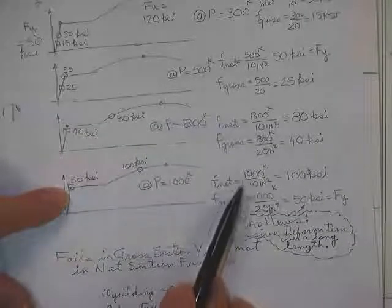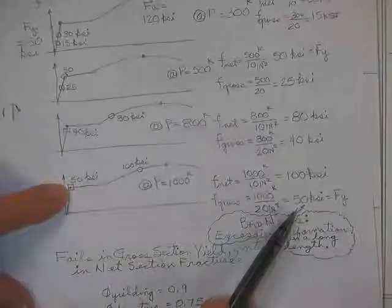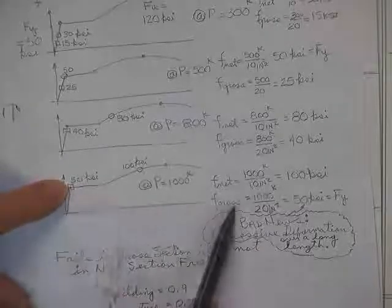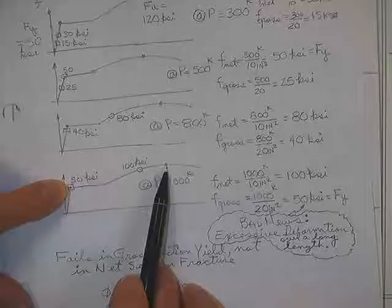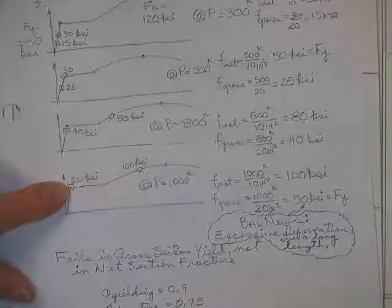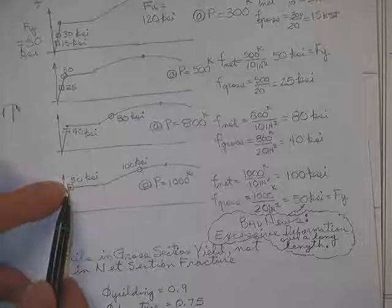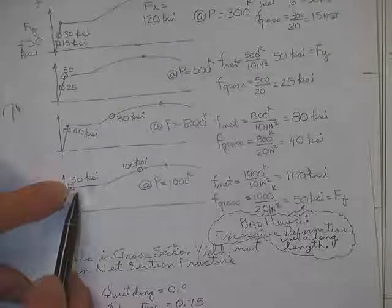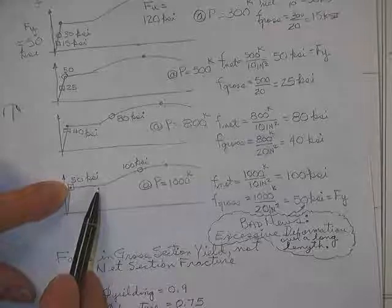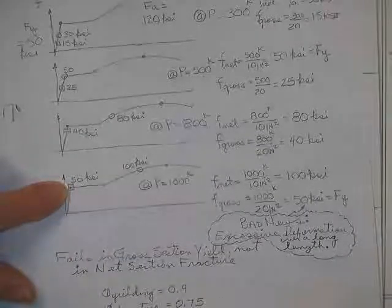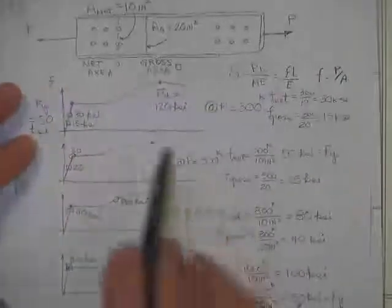Now then, for this case, when you put 1,000 kips on there, the 1,000 kips divided by 20 square inches, we've reached in the gross area 50 ksi, and in the net area, it's only 10 square inches, we've reached 100, still less than 120. Nothing has broken, but a failure has occurred. Nobody died still, but it is not serviceable. Once all the fibers in the main section reach 50, it's going to stretch quite a bit, and things are going to get really out of shape, and the doors aren't going to open. That's the time you must stop.